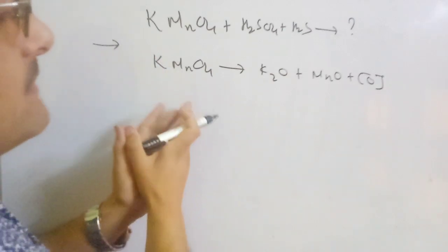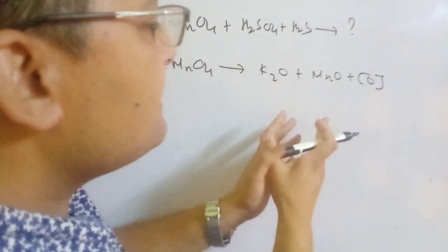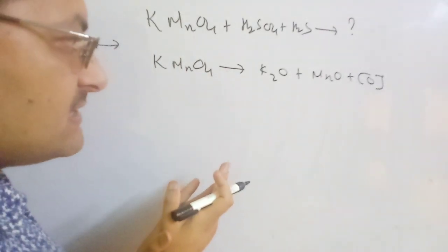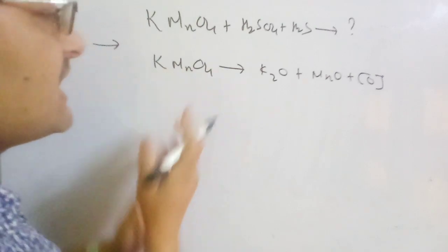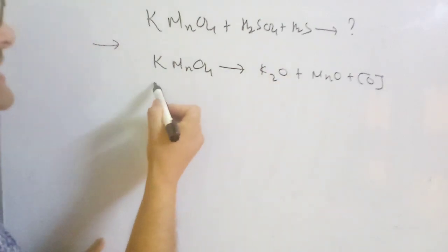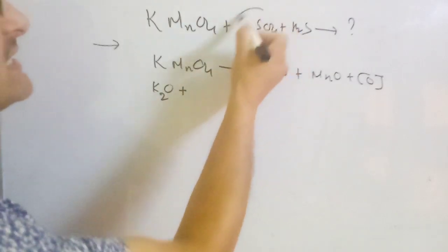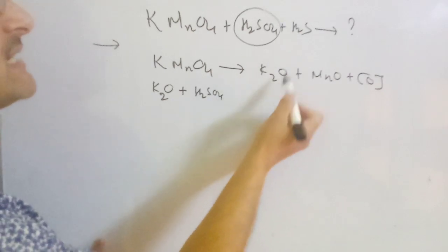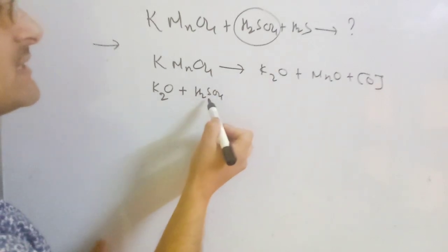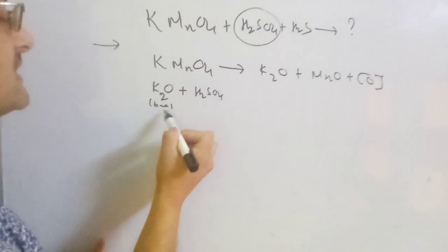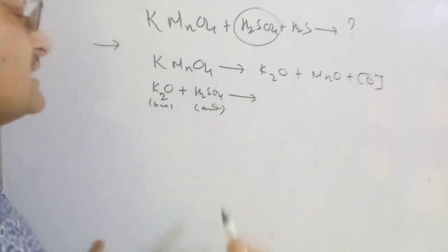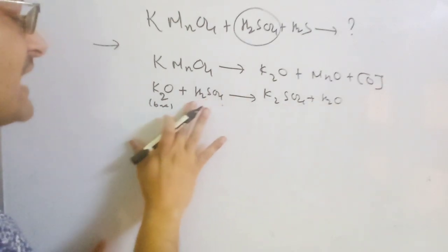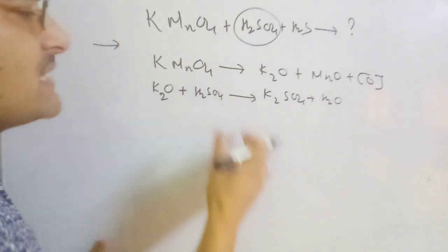KMnO₄ gives partial products like potassium oxide (K₂O), manganese oxide (MnO), and nascent oxygen. This is the first partial equation. Potassium oxide is a metallic oxide and it reacts with the acid H₂SO₄ — base reacts with acid — giving K₂SO₄ plus water. Salt and water is formed when acid reacts with base. In the next step, MnO (manganese oxide) is also a basic oxide, so it also reacts with H₂SO₄ to give MnSO₄ (manganese sulfate) plus water.